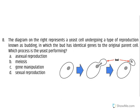The diagram on the right represents a yeast cell undergoing a type of reproduction known as budding, in which the bud has identical genes to the original parent cell. Which process is the yeast performing?